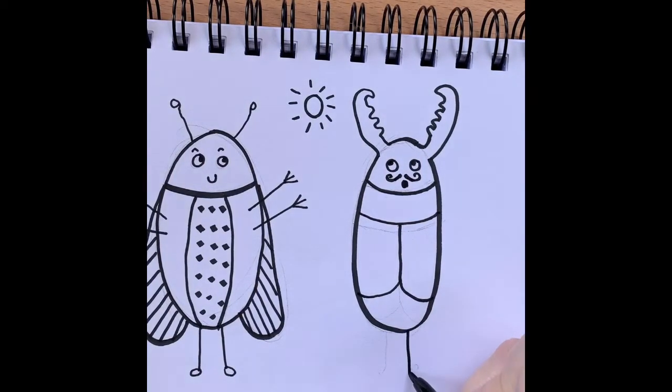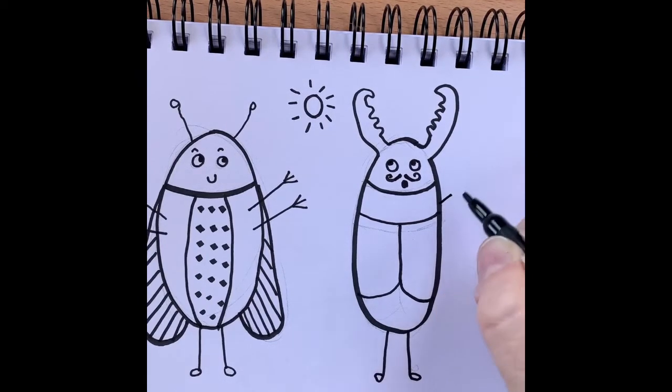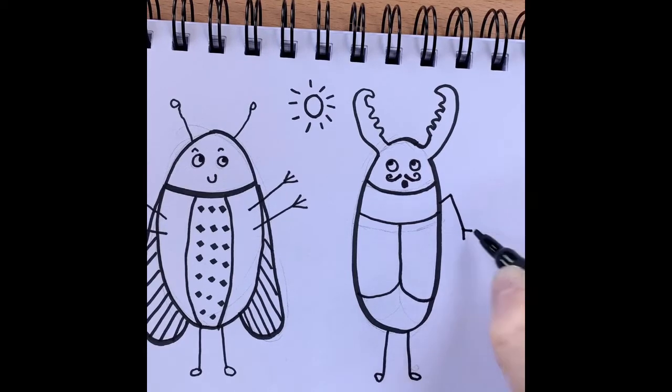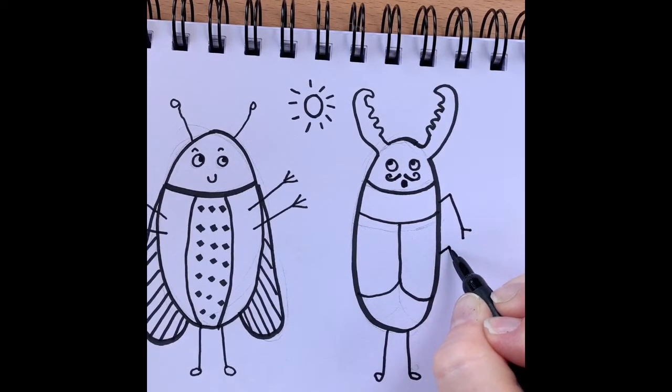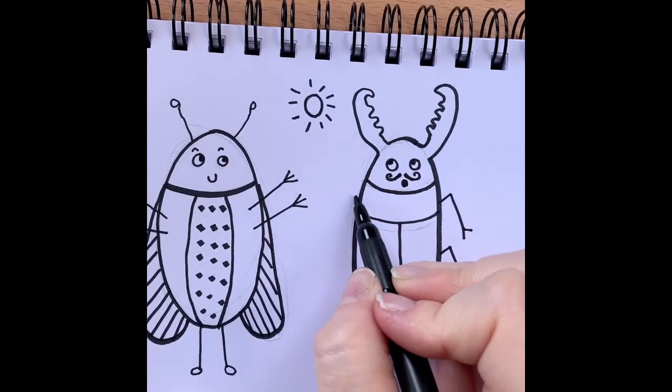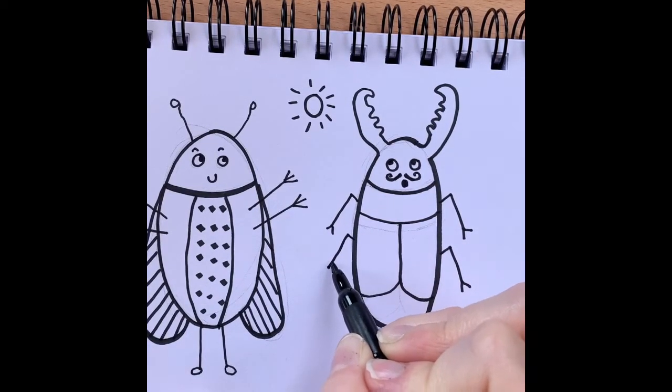We're going to add some legs. So a line down. A little circle. And we're going to do legs a little bit differently on some bugs. We're going to do a line up. We're going to come down. And then we're going to do a V shape on these ones. We're going to do one a little bit further down. Go up, down, and over the shape. Up, down, a V shape. Up, down, and a V shape.